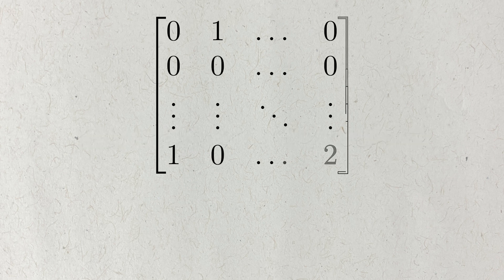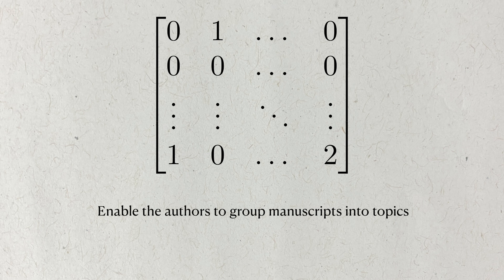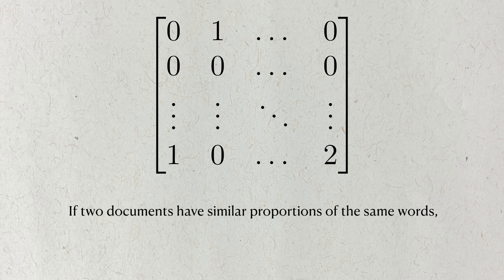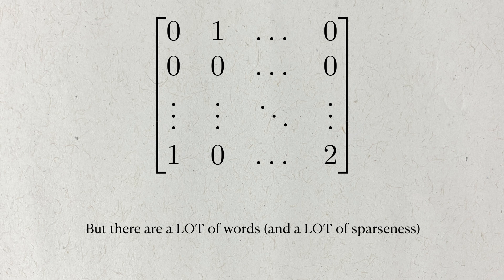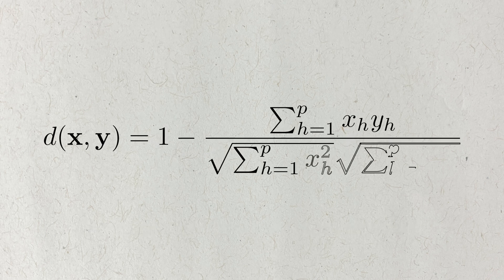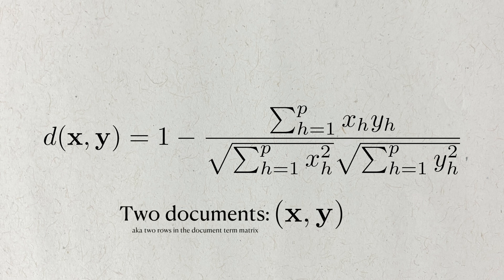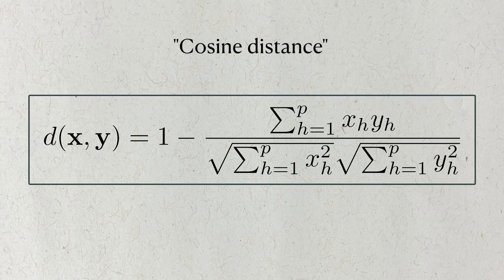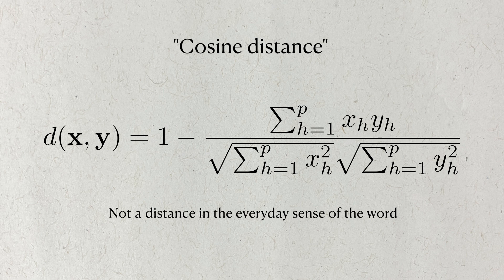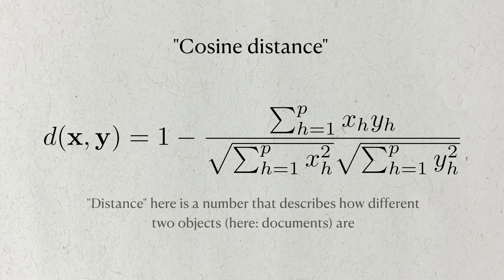By formatting the data this way, the authors hope to be able to better organize documents into topics. Intuitively, if two documents have similar proportions of the same words, then we might be able to say they come from the same topic. But there are a lot of words to consider, so the authors use a very specific notion of distance to summarize all of this information into one number. Given two documents and their inverse document frequencies, the cosine distance between them is given by this equation. This is not a distance in the everyday sense of the term, which is usually Euclidean distance.